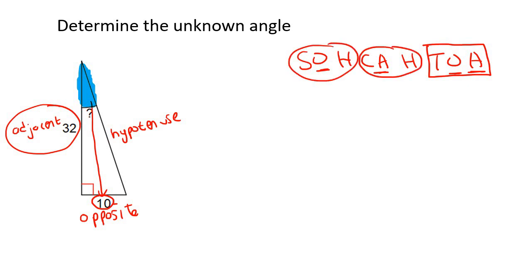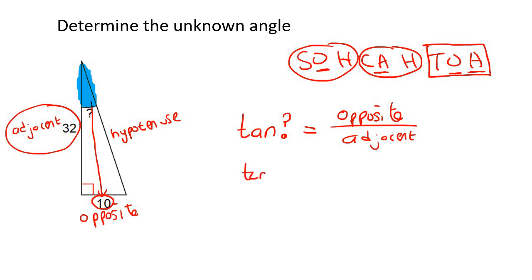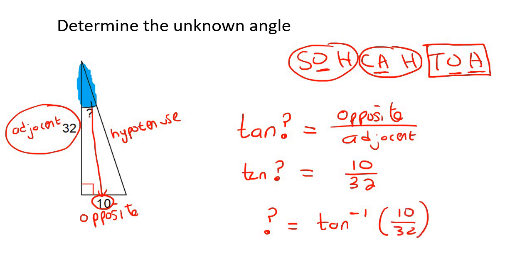We don't have the hypotenuse, so we're going to say tan of this unknown angle is equal to opposite over adjacent — that is, 10 over 32. To actually find the angle, you're going to use inverse tan. On some calculators, press the second function or shift button, then tan, of 10 over 32. If you do this correctly, you should get an angle of 17.35 degrees.